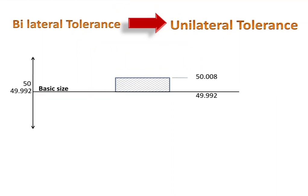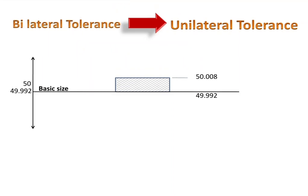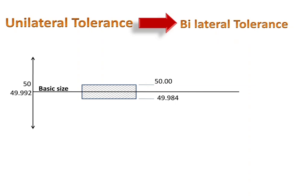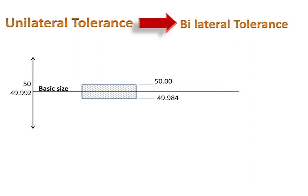So in the bilateral tolerance system we shift only the basic size. Similarly, we change a unilateral tolerance system to a bilateral tolerance system by changing the position of the basic size only.